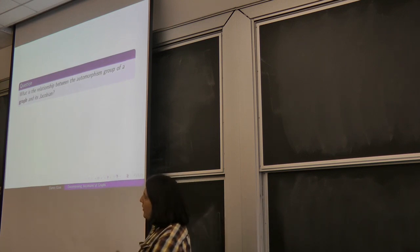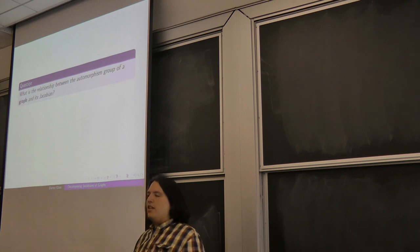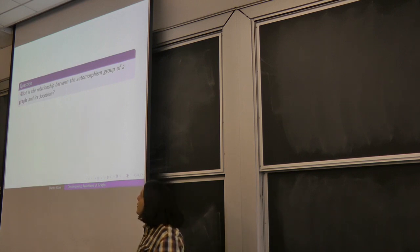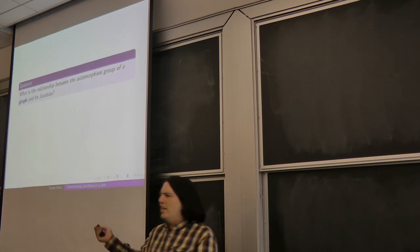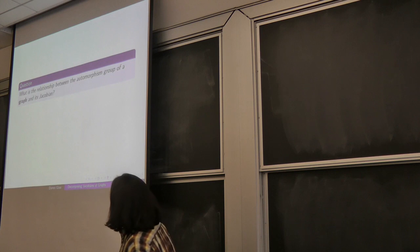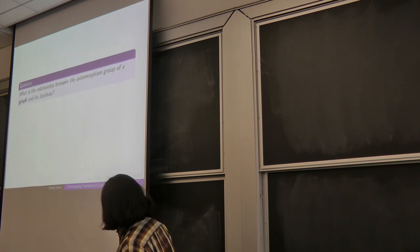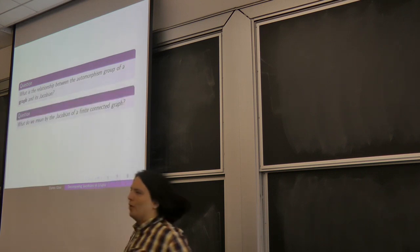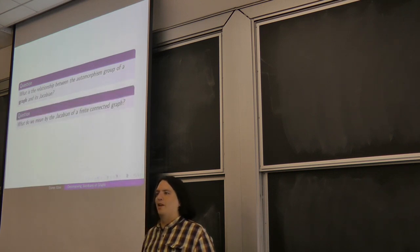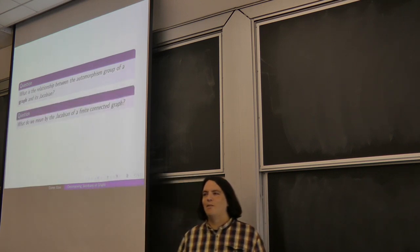I got very interested in this analogy about the Jacobians of graphs, which leads to the first question: what do I mean by the Jacobian of a graph? What does that even mean?